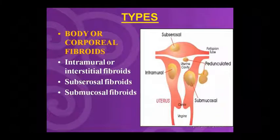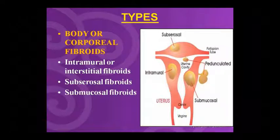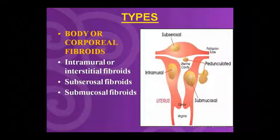The types of uterine fibroid include body or corporeal fibroid, intramural or interstitial fibroid, subserosal fibroid, and submucosal fibroid. The corporeal fibroids are body-based, and the three main types are intramural, subserosal, and submucosal.